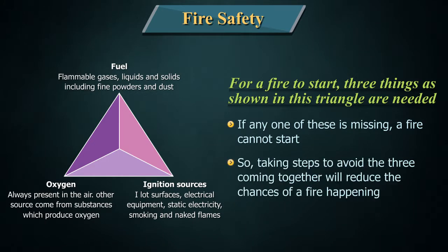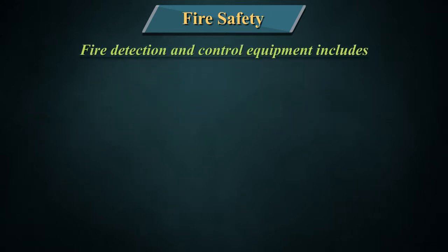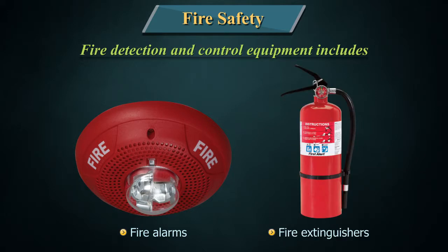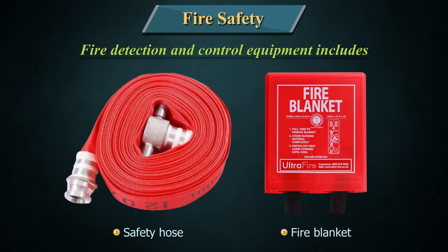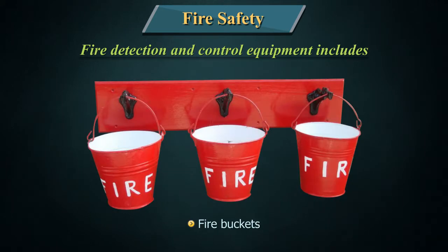Taking steps to avoid the three coming together will reduce the chances of a fire happening. Fire detection and control equipment includes fire alarms, fire extinguishers, safety hose, fire blanket, fire buckets, etc.